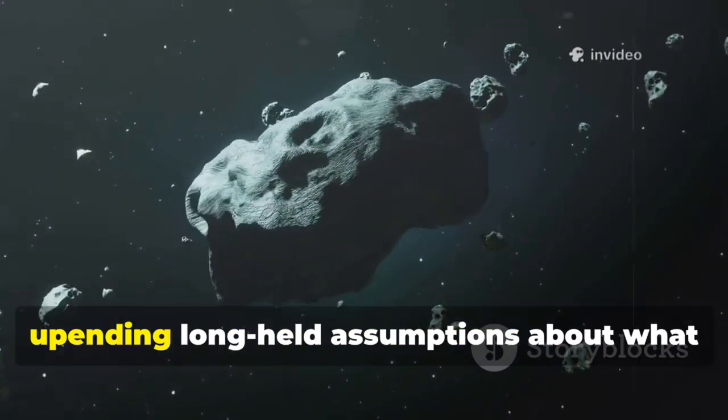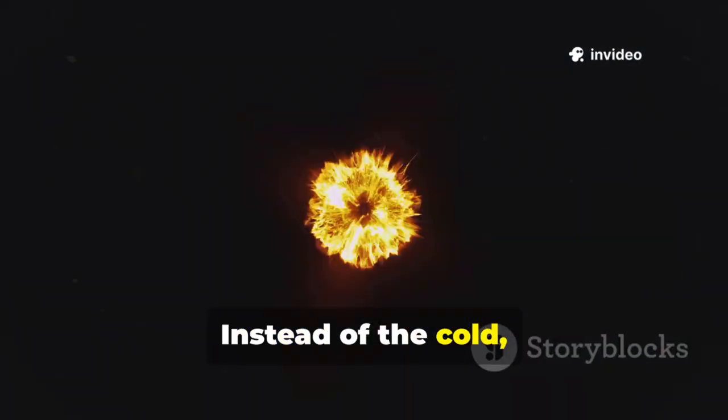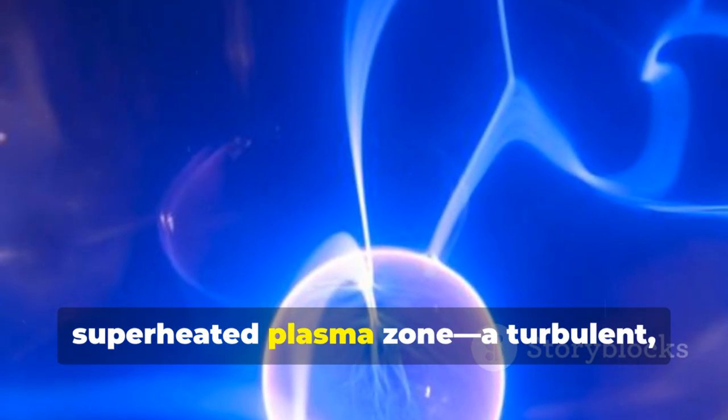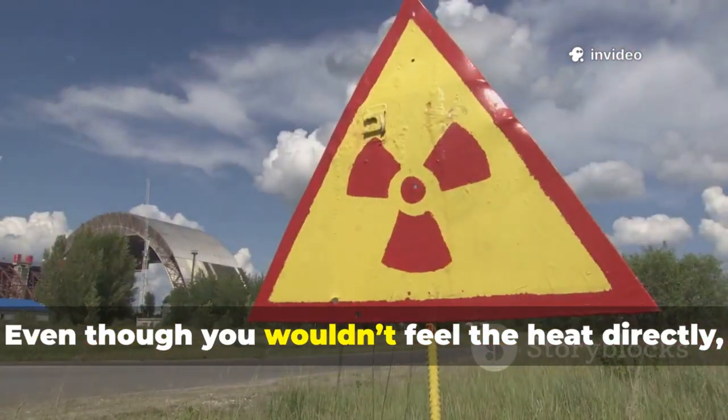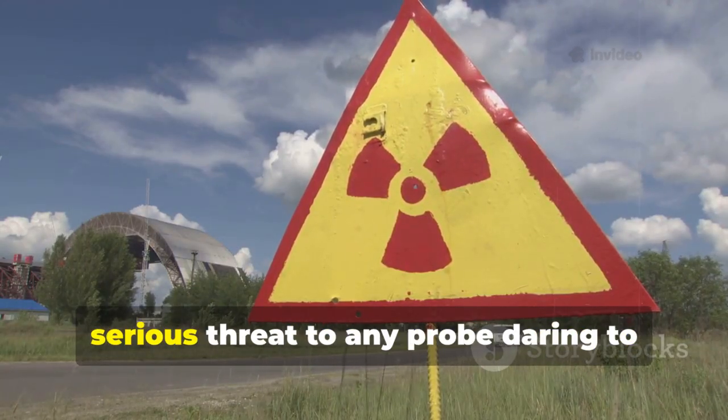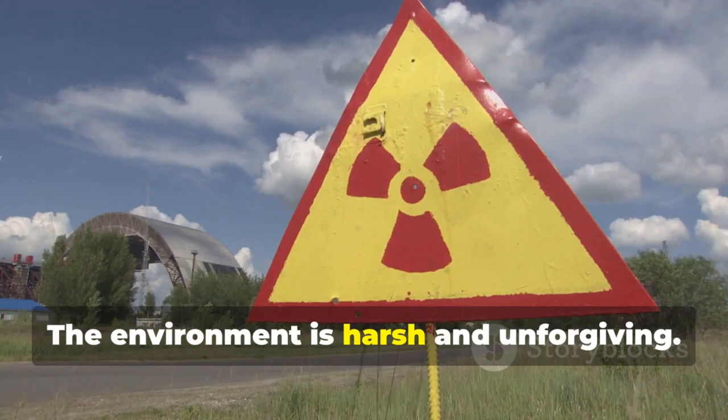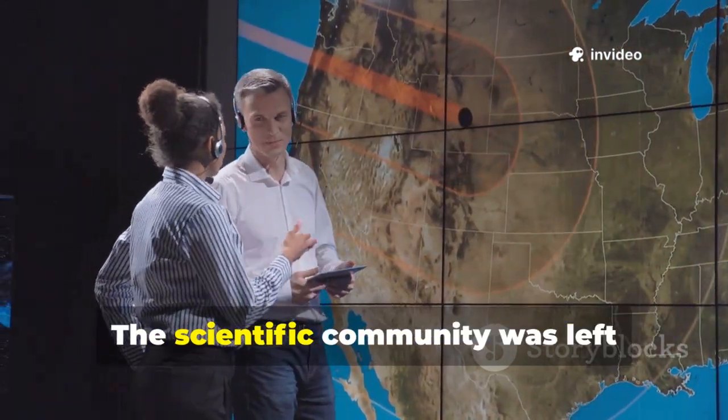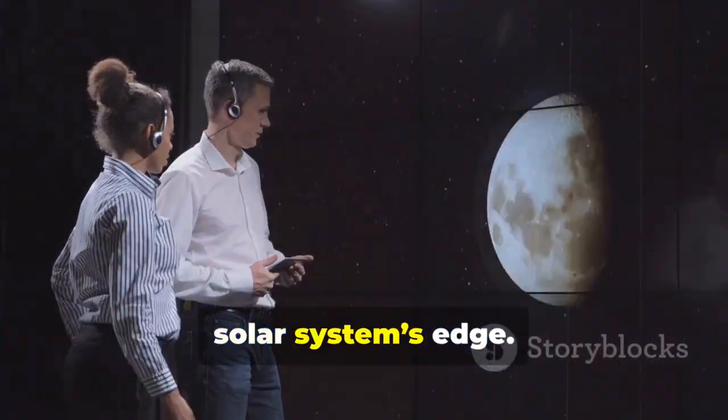The discovery of such intense heat at the solar system's edge left scientists stunned. It was a complete surprise, upending long-held assumptions about what lay beyond the sun's protective bubble. Instead of the cold, empty void they expected, Voyager found itself surrounded by a superheated plasma zone, a turbulent energetic environment unlike anything previously imagined. Even though you wouldn't feel the heat directly, the radiation here is so intense it can fry spacecraft electronics and pose a serious threat. The environment is harsh and unforgiving. No existing theory had predicted the presence of such a feature. The scientific community was left scrambling for answers, forced to rethink their models of the solar system's edge.